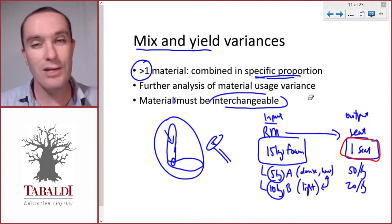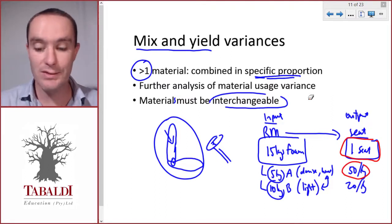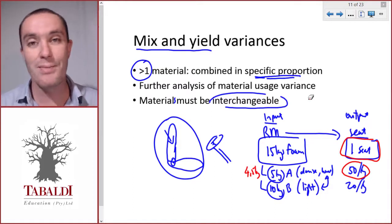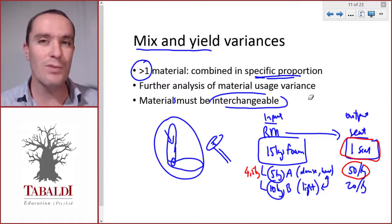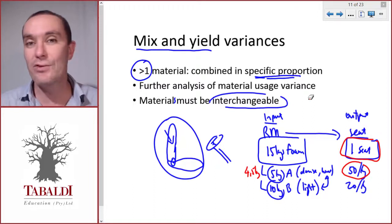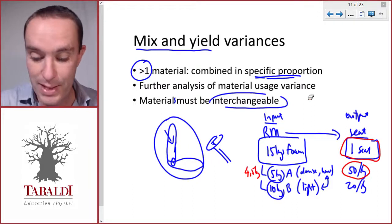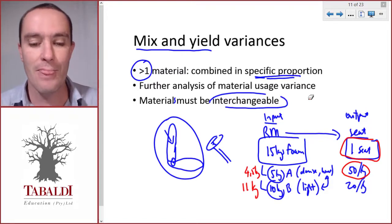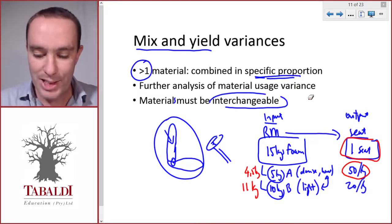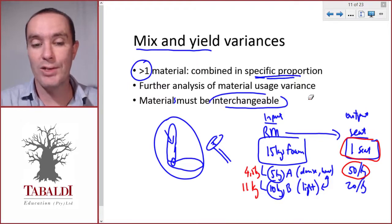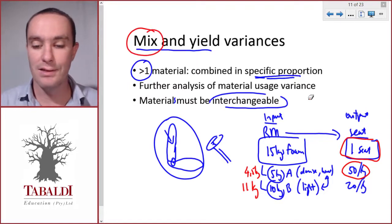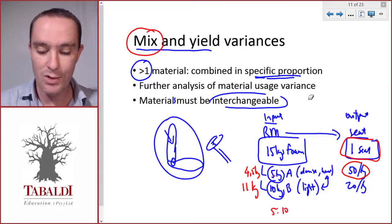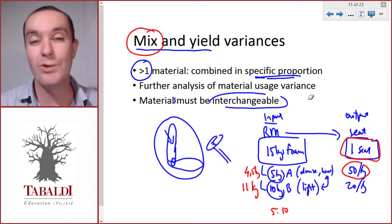We could try to save some money because foam type A is expensive, so we decide to use only 4.5 kilograms of foam type A. That means the seats won't be as firm, so we might have to add more of foam type B to compensate. We use 11 kilograms of foam type B. By changing these proportions, we change the mix. We're not in the standard mix of 5:10 anymore - we have a new mix of 4.5:11.